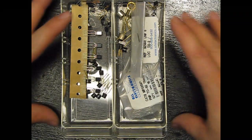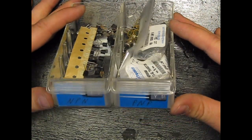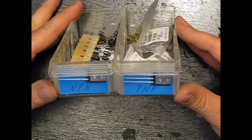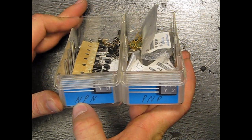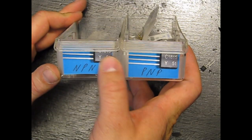And there's two types to start off with. I've got two boxes, containers here. I have NPN and PNP transistors.